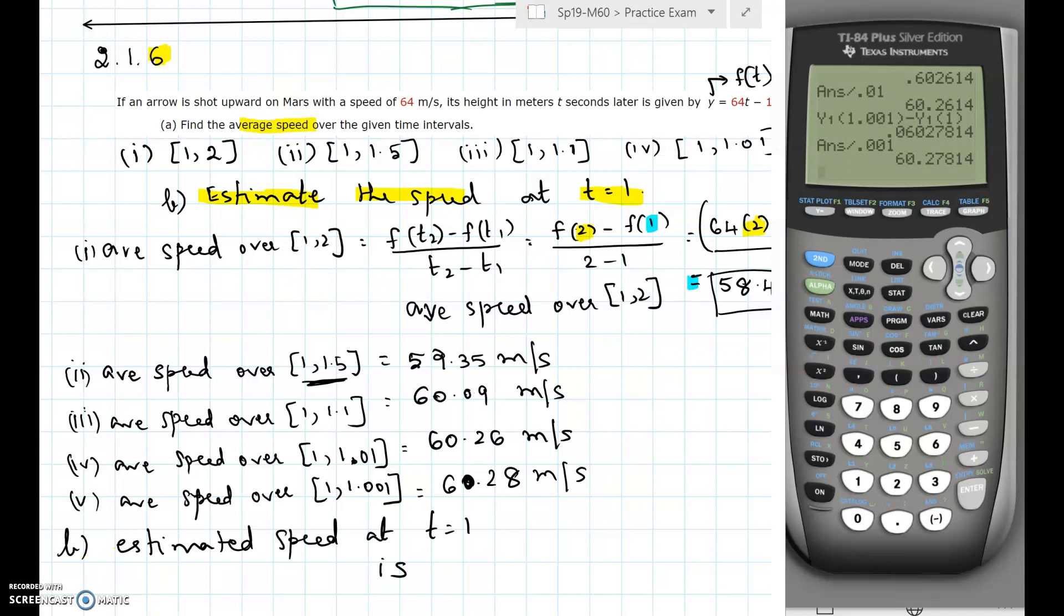If you notice we have evaluated 1 through 2, 1 through 1.5. We have reduced the time interval. We started off with the bigger interval 1 through 2 and then we slowly decreased to 1 to 1.5, then 1 through 1.1, 1 through 1.01, 1.1 to 1.001. We are decreasing the length of the interval smaller and smaller.